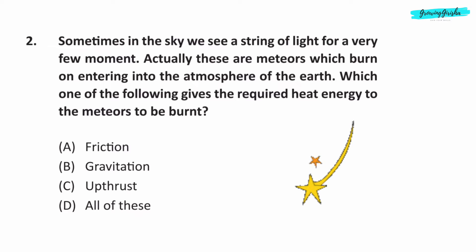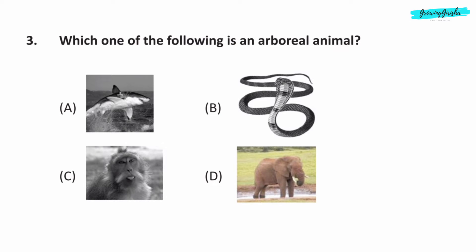Question 2. Sometimes in the sky, we see a string of light for a very few moment. Actually, these are meteors, which burn on entering into the atmosphere of the earth. Which one of the following gives the required heat energy to the meteors to be burnt? Option A: Friction. Question 3. Which one of the following is an arboreal animal? Arboreal animals are the animals who spend majority of their lives on trees. And from the options, monkey is an arboreal animal. So answer is option C.